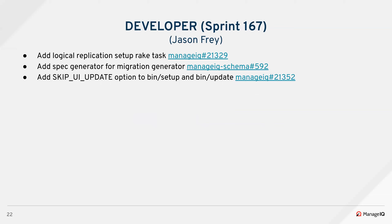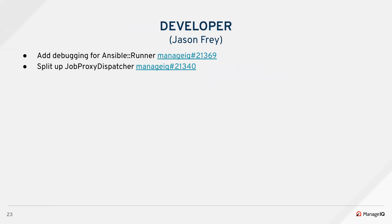Joe added a Rake task to help developers set up logical replication, which is a lot simpler than it used to be. Nick L added a spec generator for our migration generator. Jason added a skip UI update to bin setup and bin update so you don't have to run all of the web packing if you don't need it. Nick added debugging for Ansible Runner, and Adam split up the JOG proxy dispatcher.